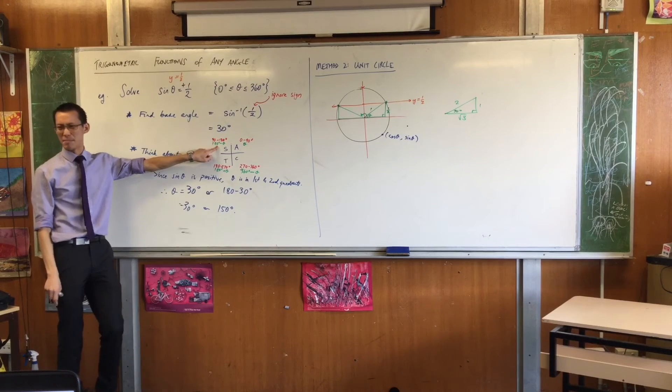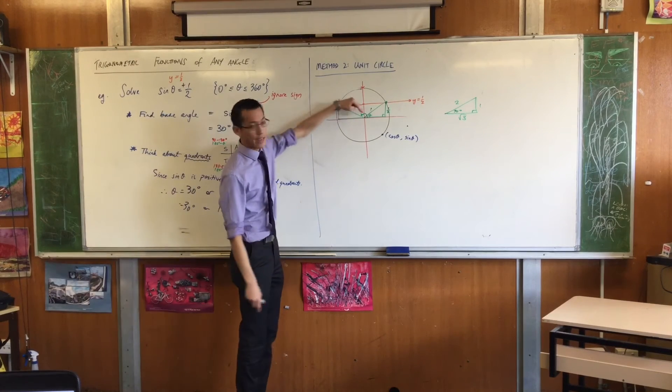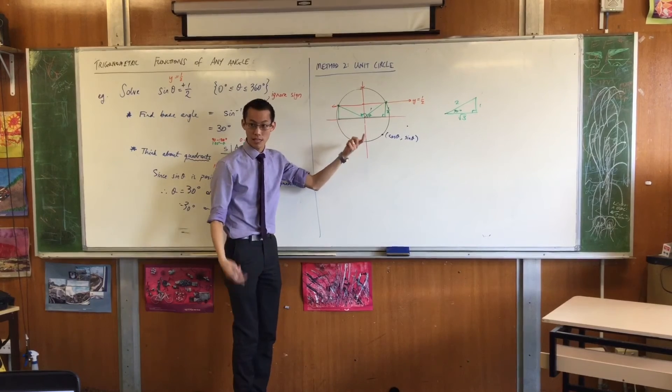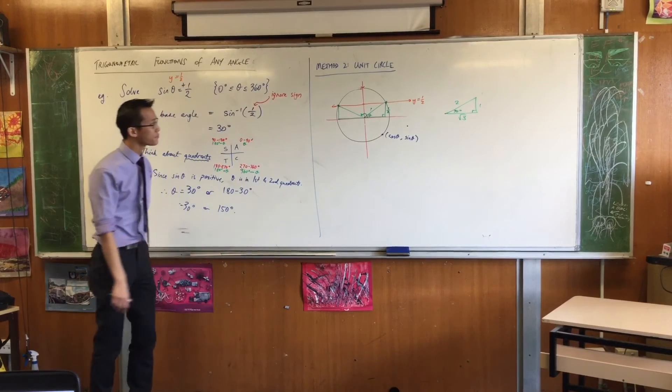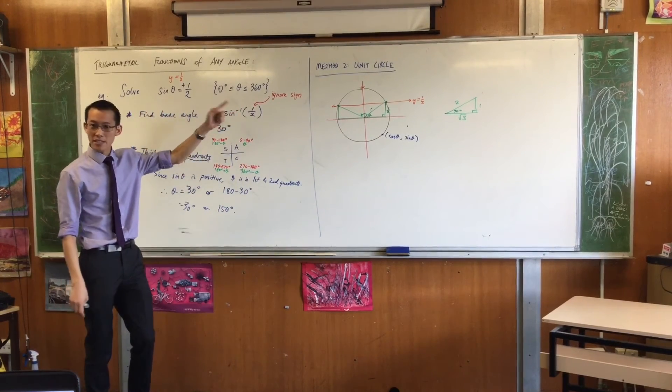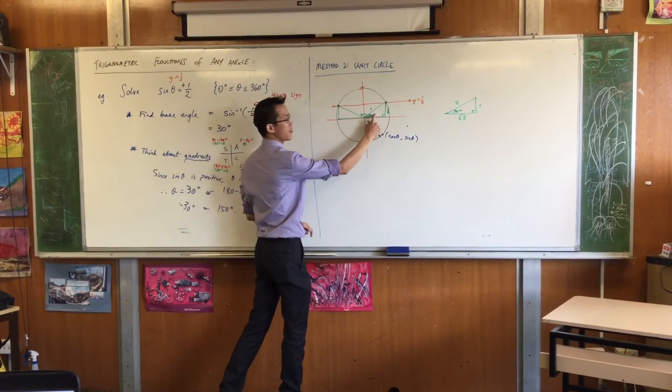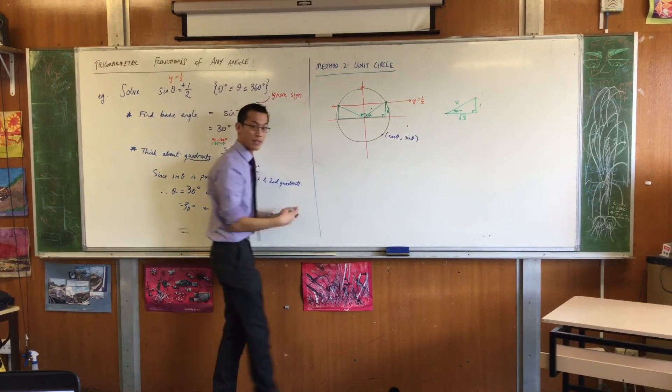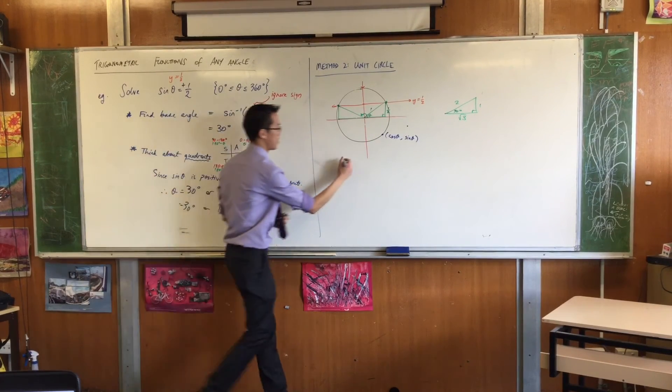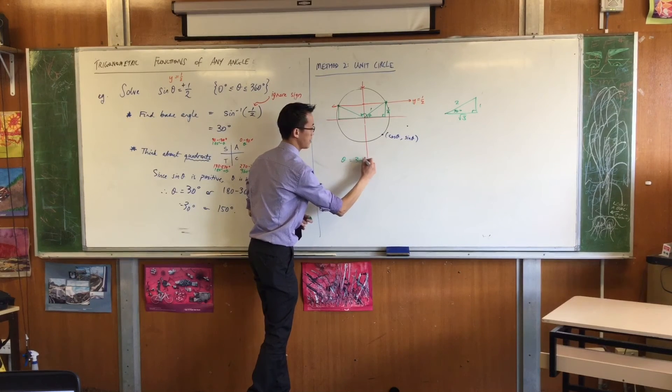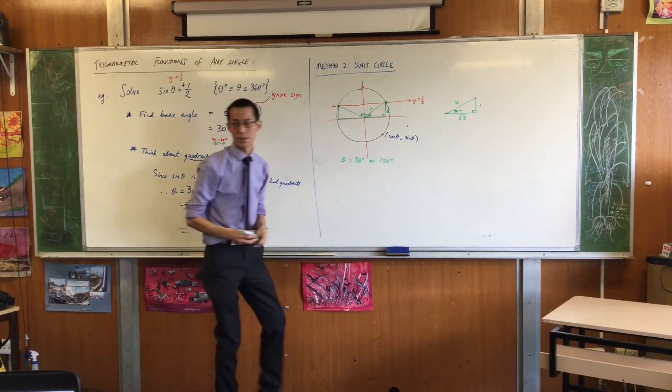That's why it's not 90 plus theta. It's 180 minus the same angle because it's symmetrical. That's what the unit circle is. So therefore, on the basis of this, I say there's 30, there's 30. So my two solutions are theta equals 30 degrees or 150 degrees.